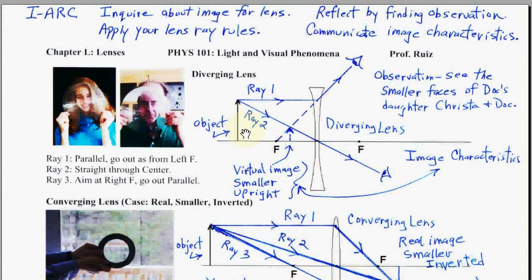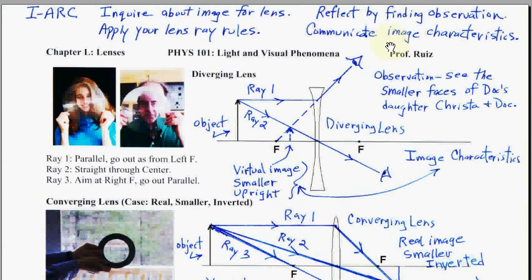Doc here with Chapter L: Lenses, a short overview of the chapter. We're going to look at the Inquiry Arc Model, where we inquire about an image for a lens — where is the image going to be? We apply our lens rules to find that image. We reflect by looking for an observation that supports our analysis, because good science requires analysis and observation. And finally, we communicate our results with the picture and the image characteristics.